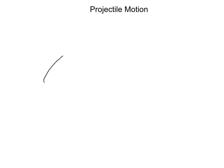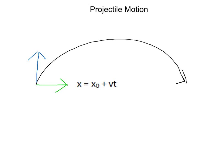Now we have projectile motion. To solve this, you split it into two components: one in the x direction and one in the y direction. The x direction has no acceleration, and the y direction has only gravity. So the x-direction equation is the constant velocity equation with zero acceleration, and the y-direction equations are the constant acceleration kinematic equations. You can only use these equations when there is constant acceleration — this is material you should have seen in physics already.